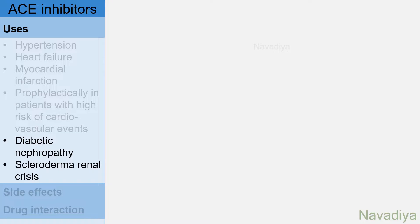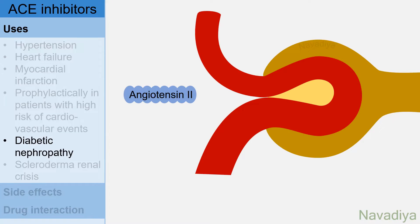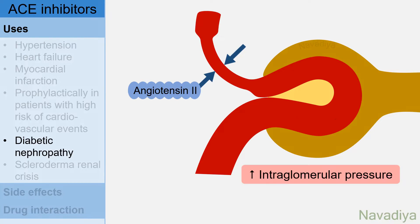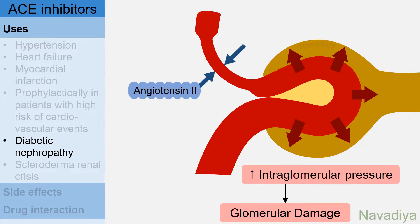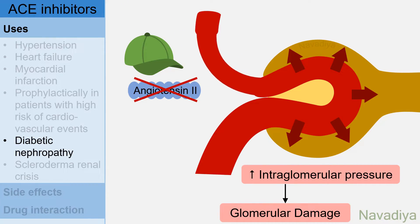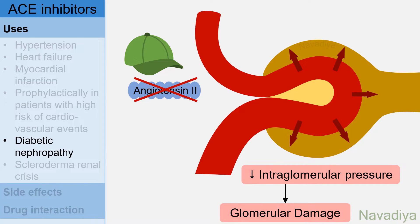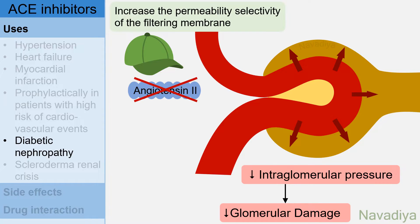Next two uses are related to the kidney. First, diabetic nephropathy. We have seen that angiotensin causes efferent arteriolar constriction which increases glomerular capillary pressure, and this pressure contributes to glomerular damage in diabetic nephropathy. When you give ACE inhibitors, there is no angiotensin to cause efferent arteriolar constriction, so glomerular capillary pressure falls which reduces the damage. Apart from this, ACE inhibitors also increase permeability selectivity of the filtering membrane, which contributes to beneficial effects in diabetic nephropathy.